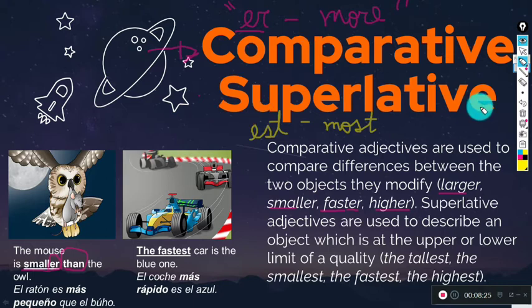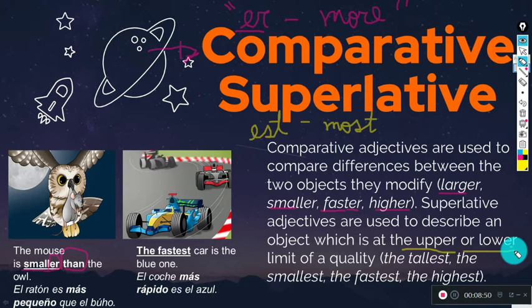The superlative highlights just one — from a group — as the upper or lower limit of quality. It can be the biggest, the smallest, the fastest, the slowest — always the most within a group. Superlatives are used to describe an object which is at the upper or lower limit of quality compared to all others.